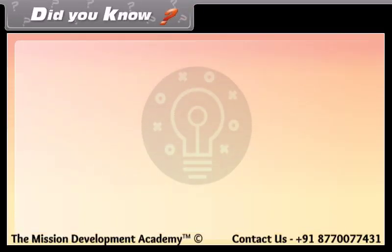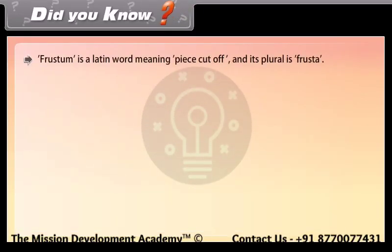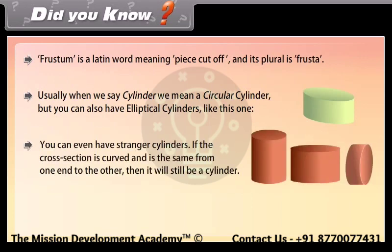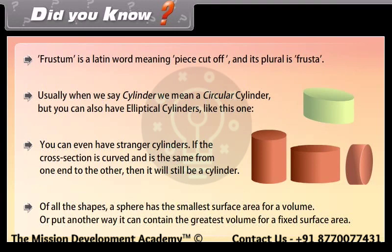Did you know? Frustum is a Latin word meaning 'piece cut off' and its plural is frusta. Usually when we say cylinder we mean a circular cylinder, but you can also have elliptical cylinders. If the cross section is curved and is the same from one end to the other, it is still a cylinder. Of all the shapes, a sphere has the smallest surface area for a given volume — or put another way, it can contain the greatest volume for a fixed surface area.